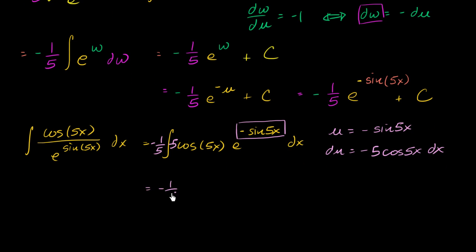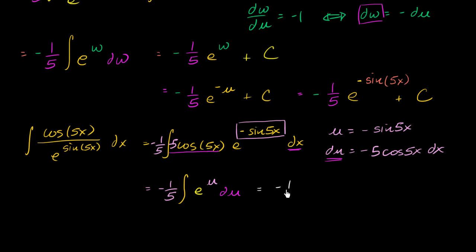That would have immediately simplified this integral to negative one fifth times the integral of — well, we have our du, which is the negative 5 cosine of 5x dx — times e to the u, where e to the negative sine of 5x is our u. Taking the antiderivative gives negative one fifth e to the u plus c. Substituting back, u equals negative sine of 5x, so this equals negative one fifth e to the negative sine of 5x plus c. And you're done.